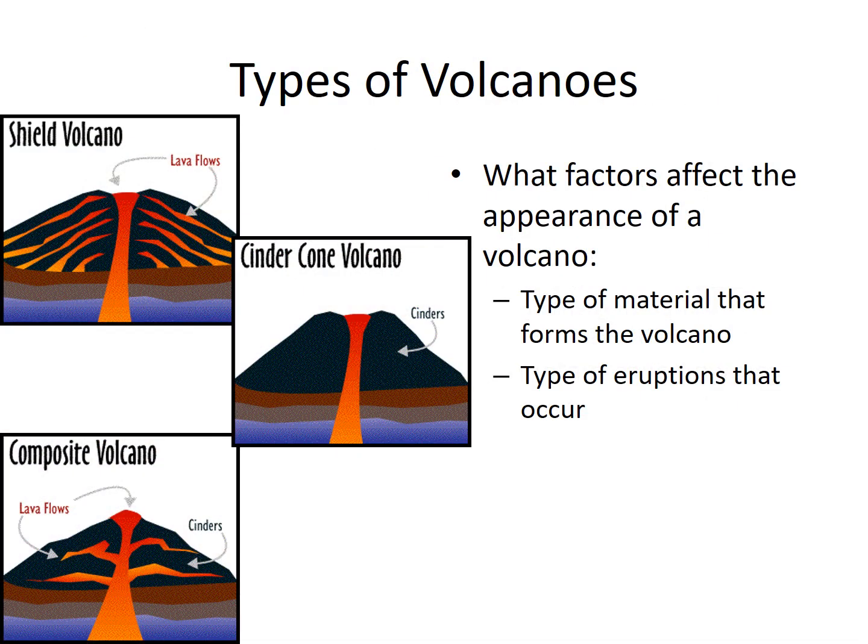We have three main types of volcanoes: a shield volcano, a cinder cone volcano, and a composite volcano. What determines the type of volcano is the type of material that forms it and the type of eruptions that occur.